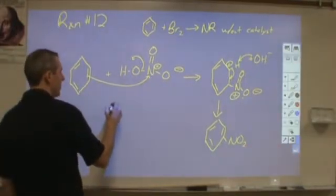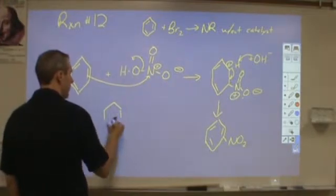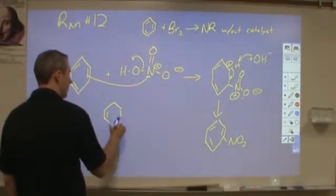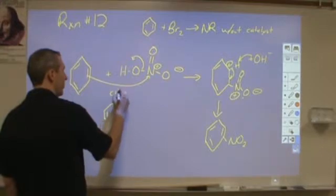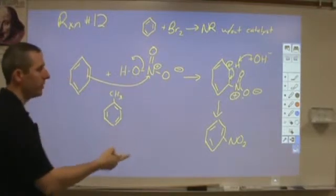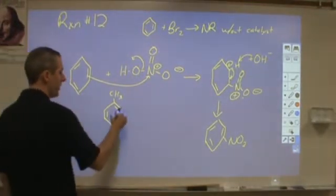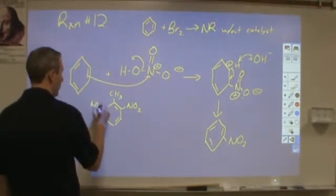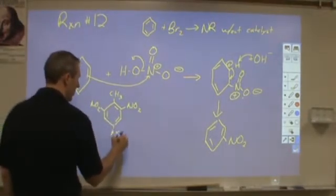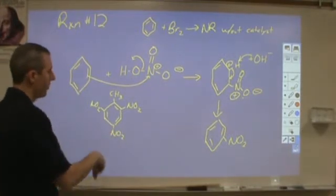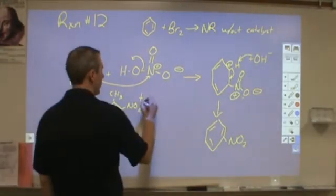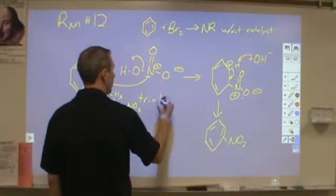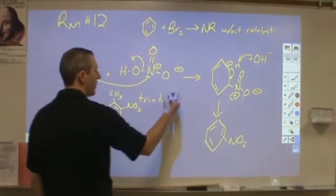And toluene is basically benzene with a methyl group attached. What you could do is you could add nitro groups to this, and you can end up with an NO2 group here, here, and here. And those three nitro groups is called trinitro. And then it's on a toluene molecule.